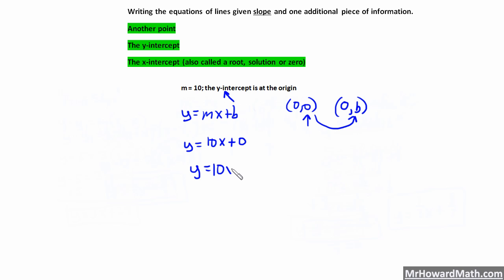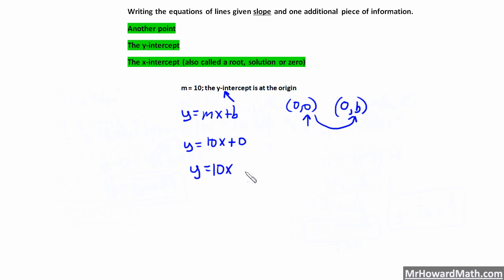Whenever you have y equals 10x or y equals 2 thirds x with nothing after it, there's an implied plus 0 that we leave off. Anytime there's no additional number after the slope term, the line goes through the origin — it is a proportional relationship, since linear through the origin is the definition of proportional.